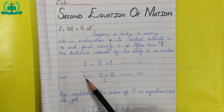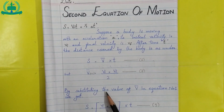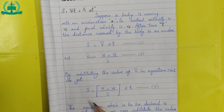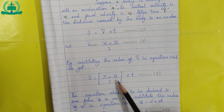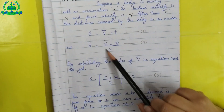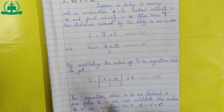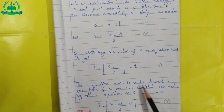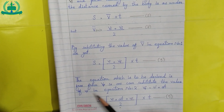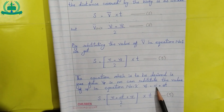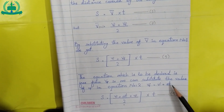Now we put this average velocity value into equation number one. By substituting the value of v, we get s equals vi plus vf upon 2 into t. The equation to be derived must be free from vf, so we substitute the value of vf from the first equation of motion: vf equals vi plus at.